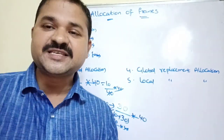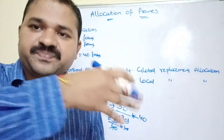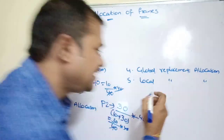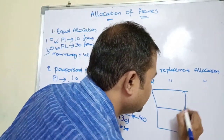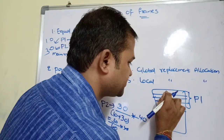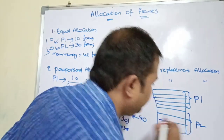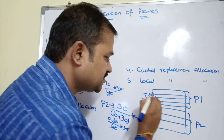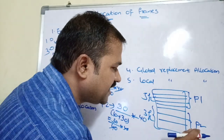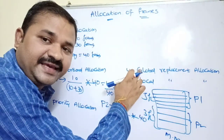Global replacement allocation allows a process to select a replacement frame from the list of all frames, even if that frame is allocated to another process. For example, let P1 be stored in 5 frames and P2 in 3 frames in main memory. In global allocation, P1 can take a frame from P2's allocated frames, and vice versa.